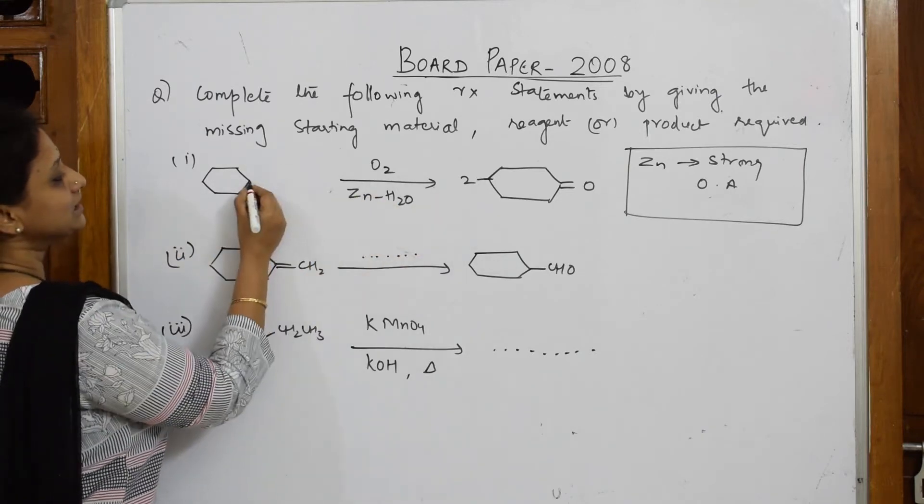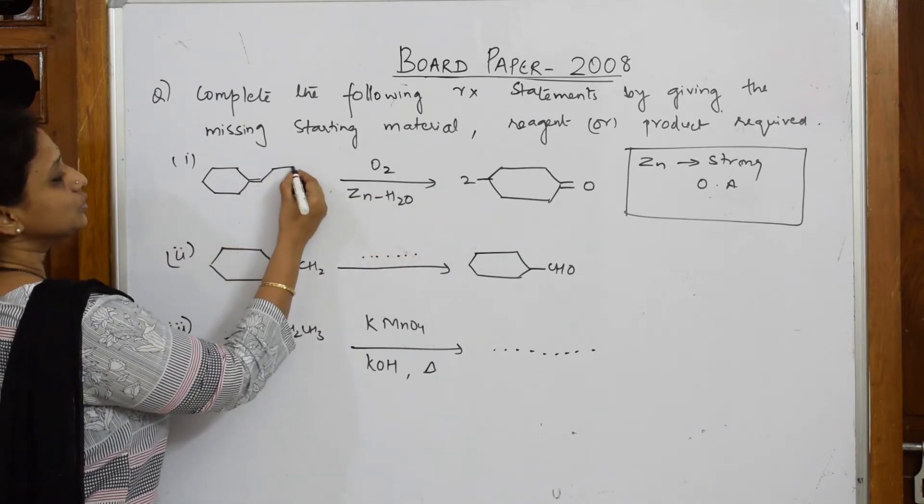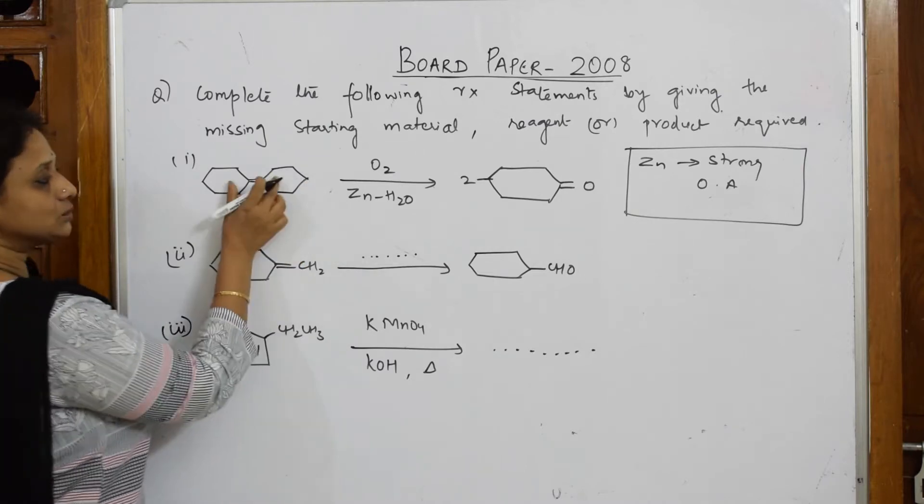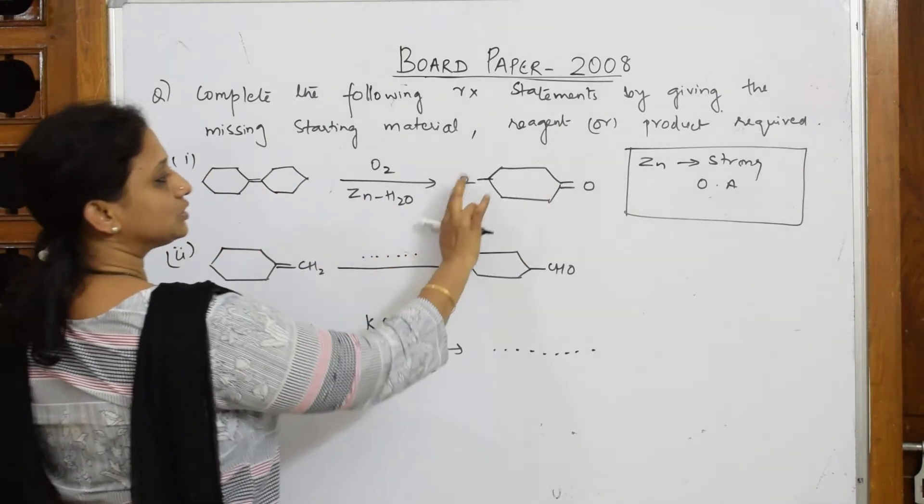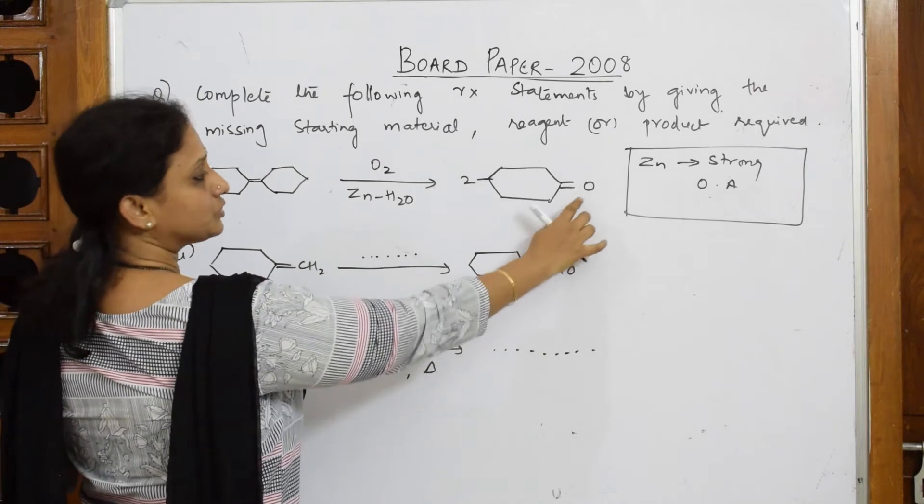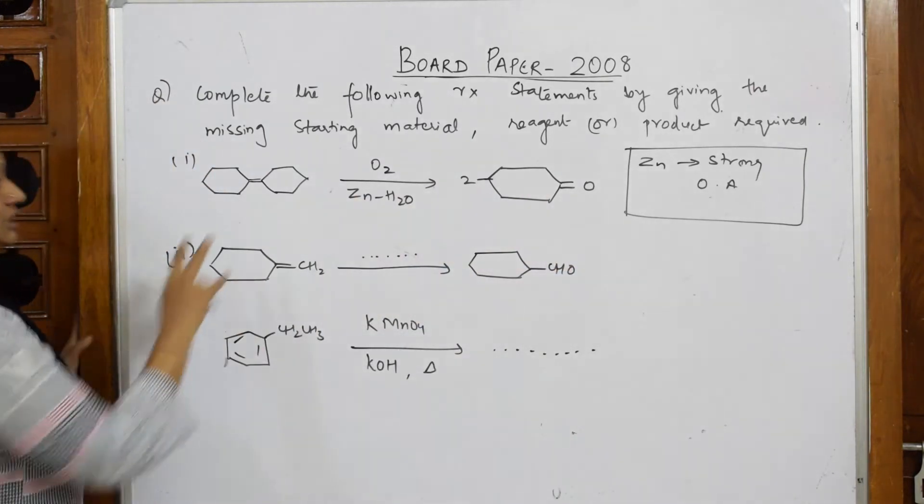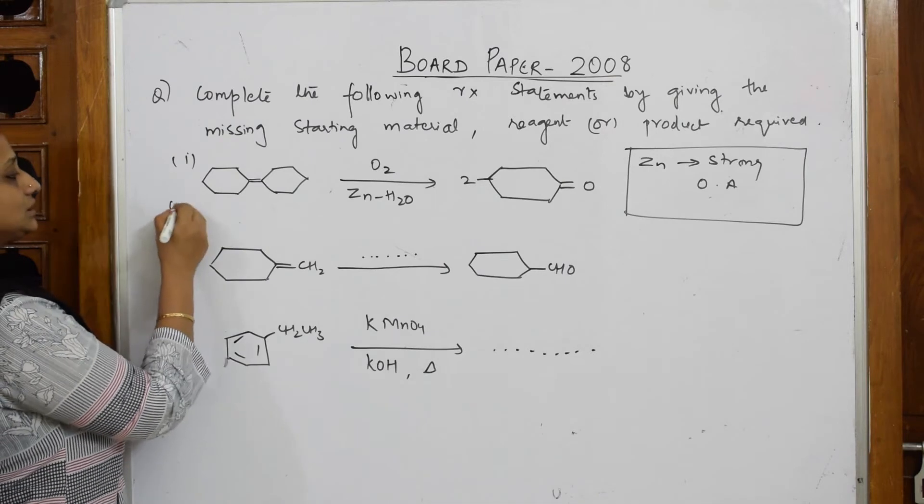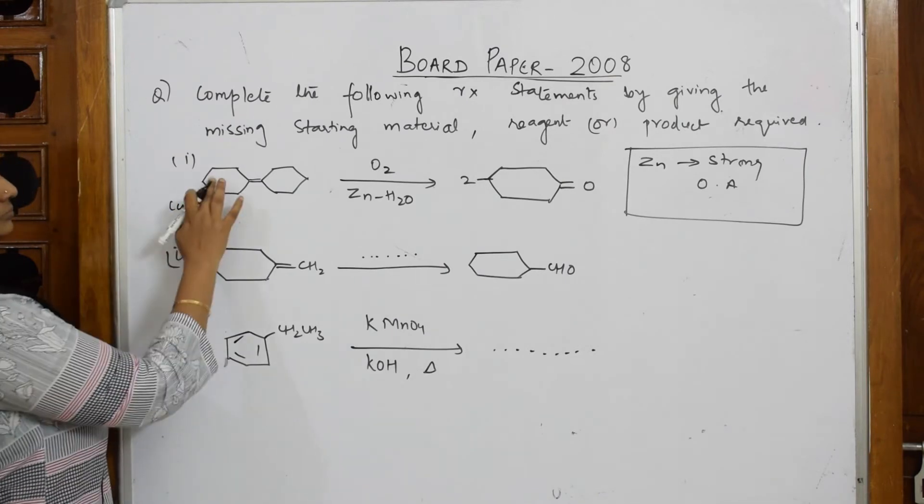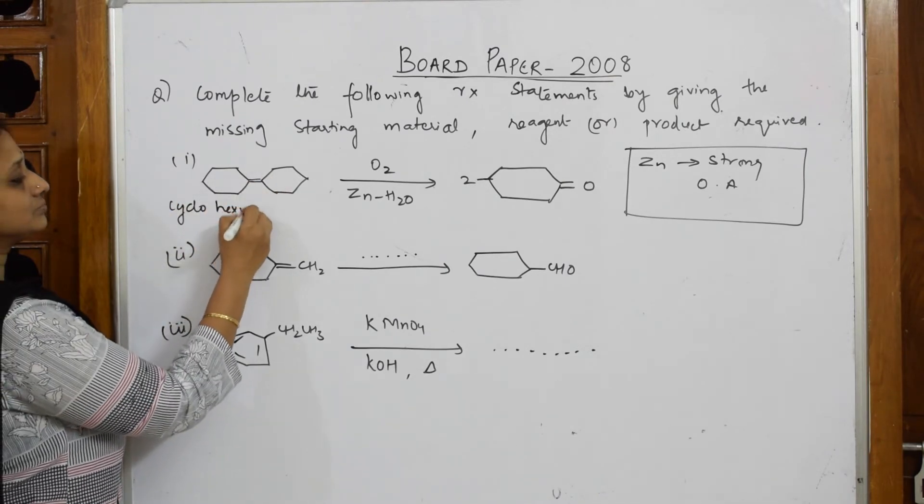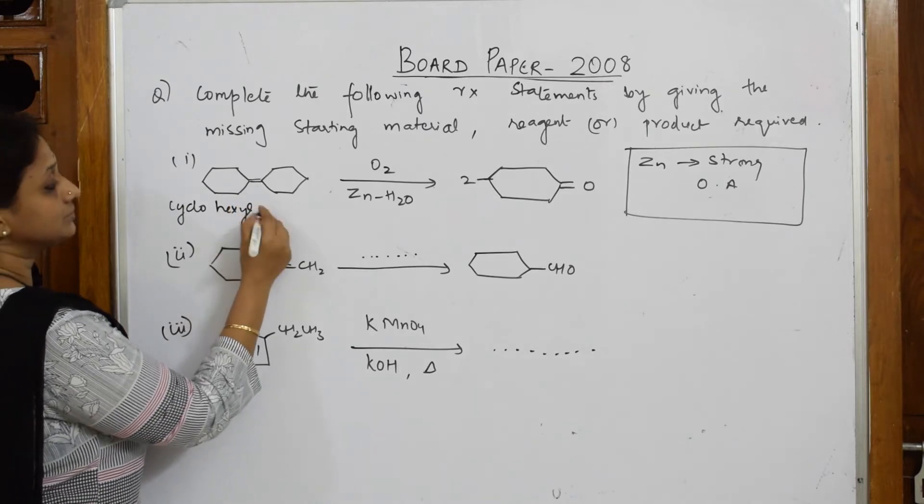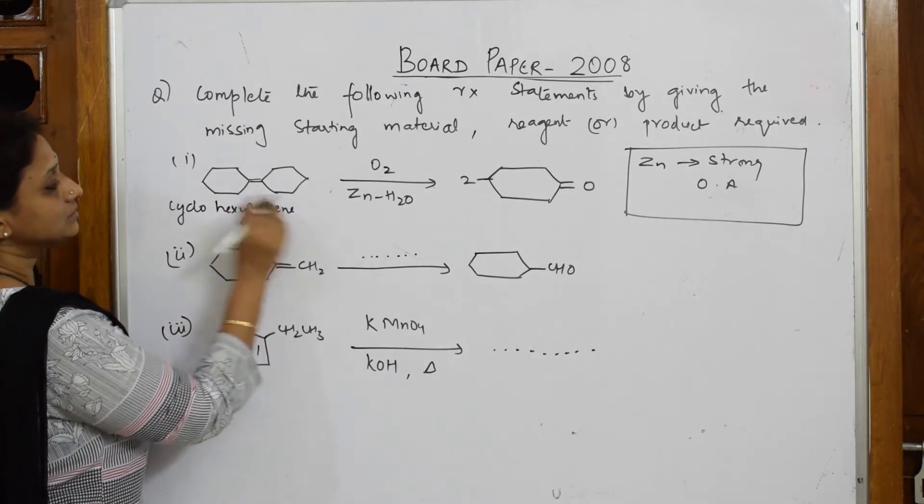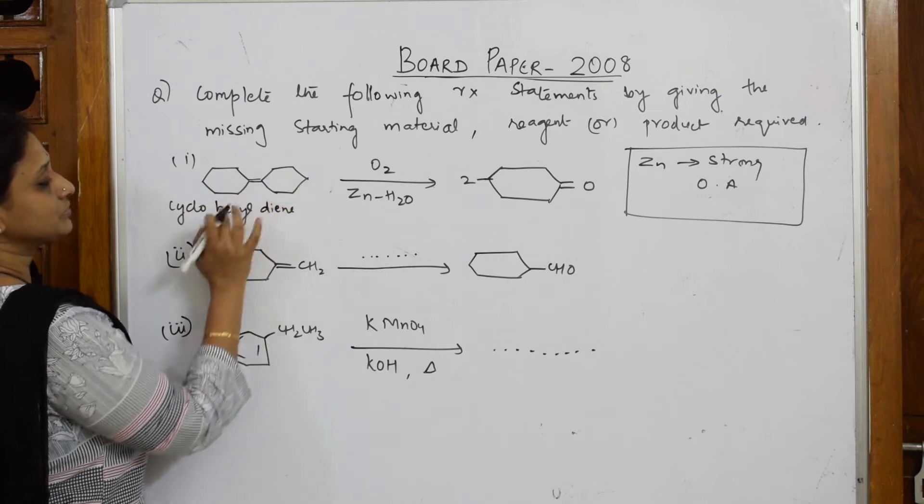There are two rings linked. This also is like this with oxygen, but to show that oxygen addition which was done by zinc, you have written like this. So this is your answer. What is this compound? Cyclohexyl diene - remember, cyclohexyl diene.